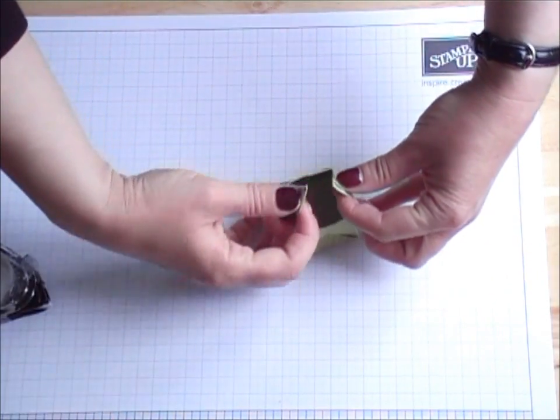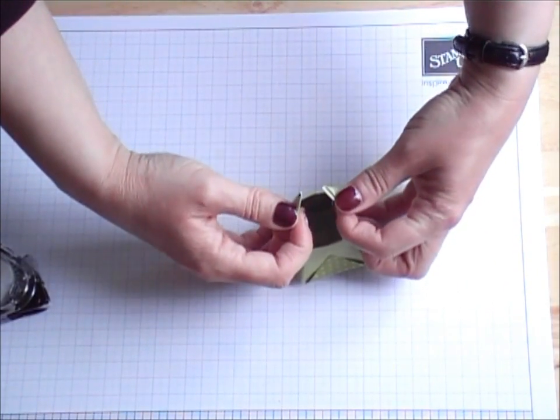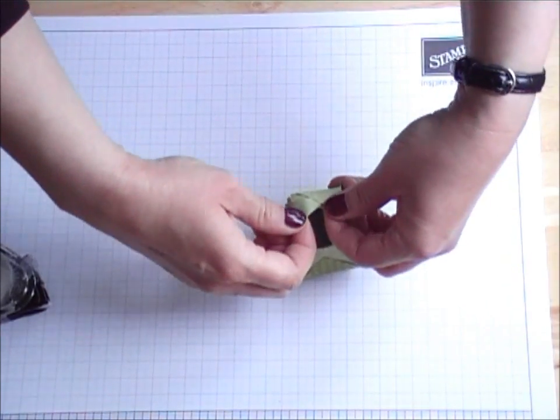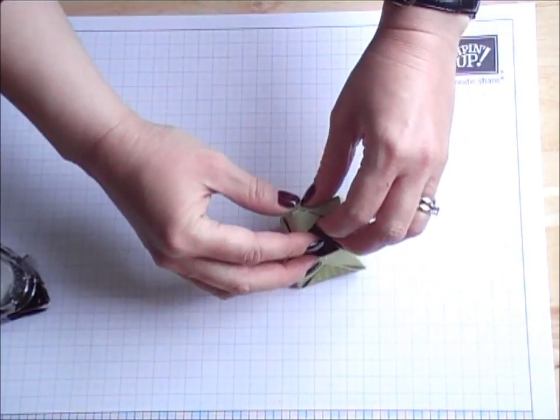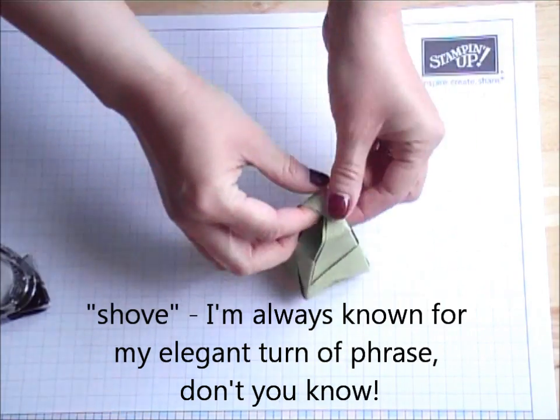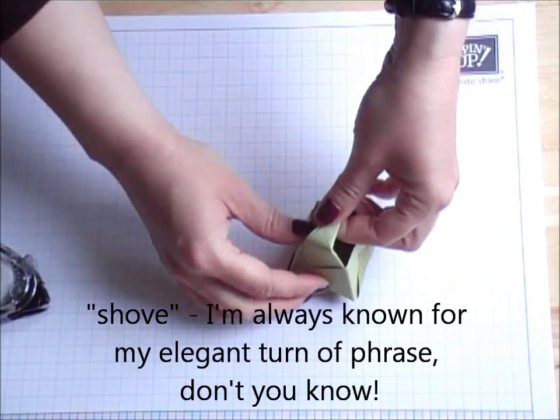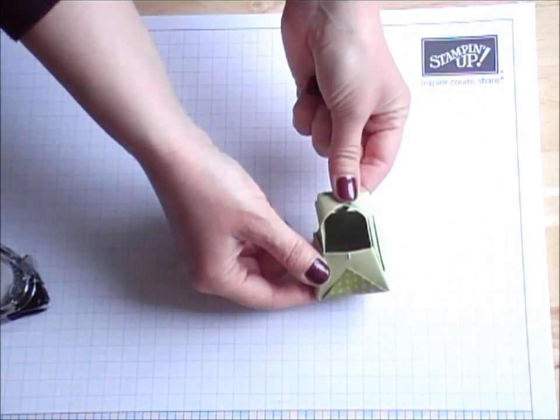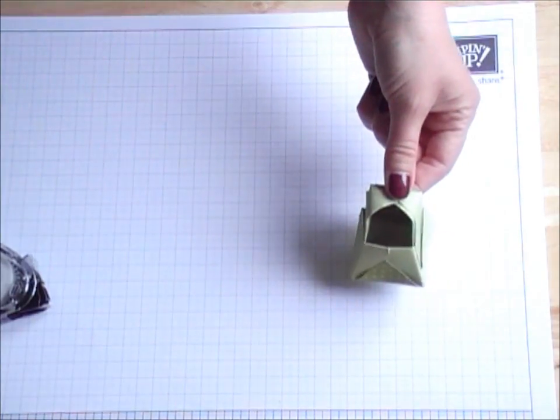And then all that's left to do is get your two top pieces, and where they're folded, just shove them together. Fold them into one another, and there you have your little basket that you've made. And as you can see.